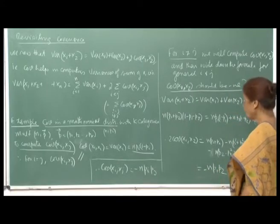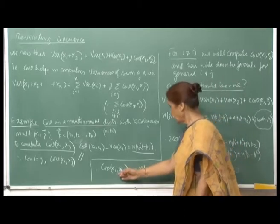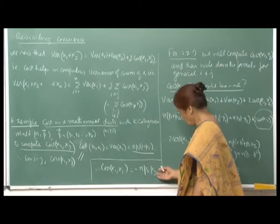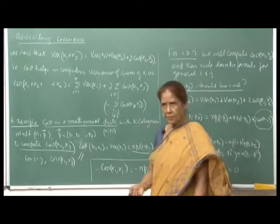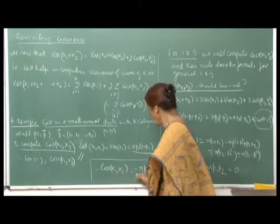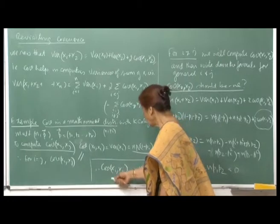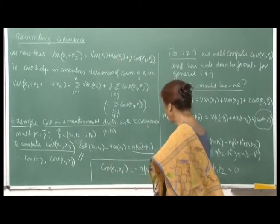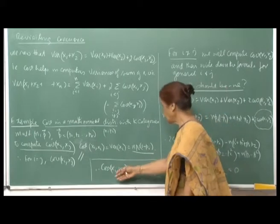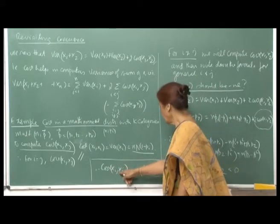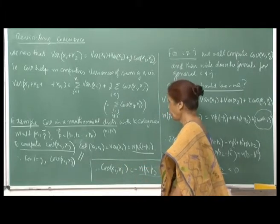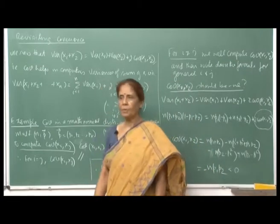For the multinomial distribution, you can immediately write Cov(Xi, Xj) = -n·pi·pj. The correlation coefficient will also be negative: ρ = -n·pi·pj divided by √(n·pi·(1-pi)) · √(n·pj·(1-pj)). This computation becomes very simple once you know the covariance formula.